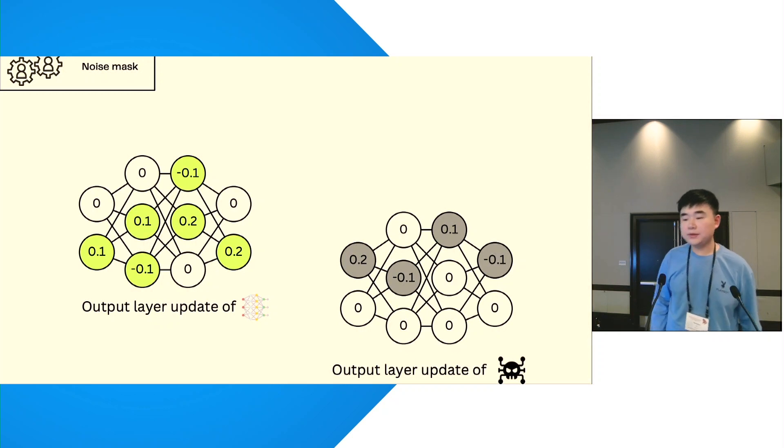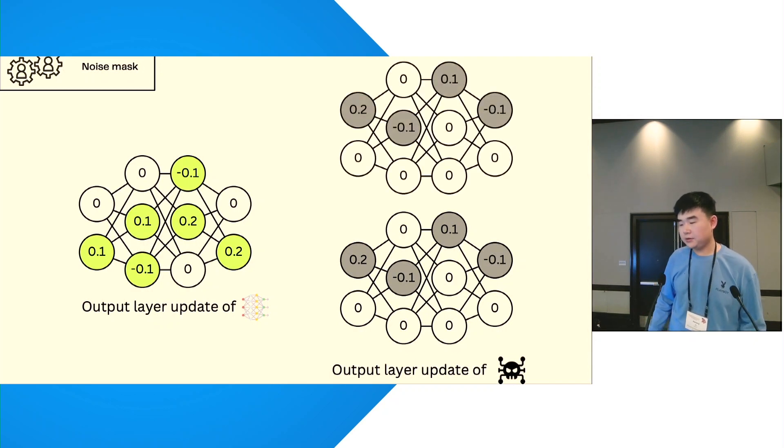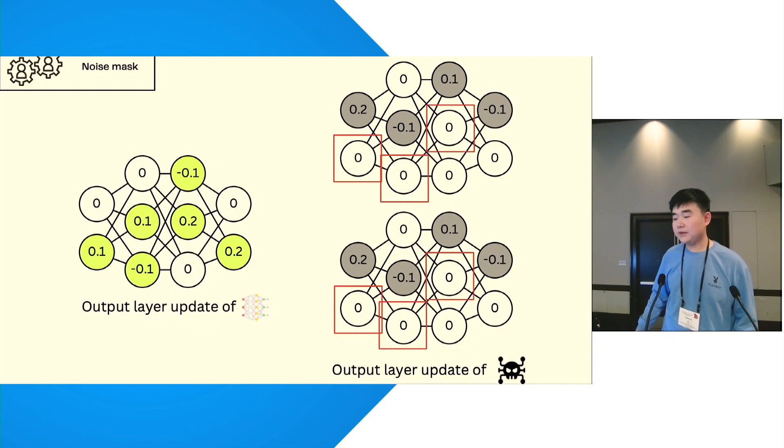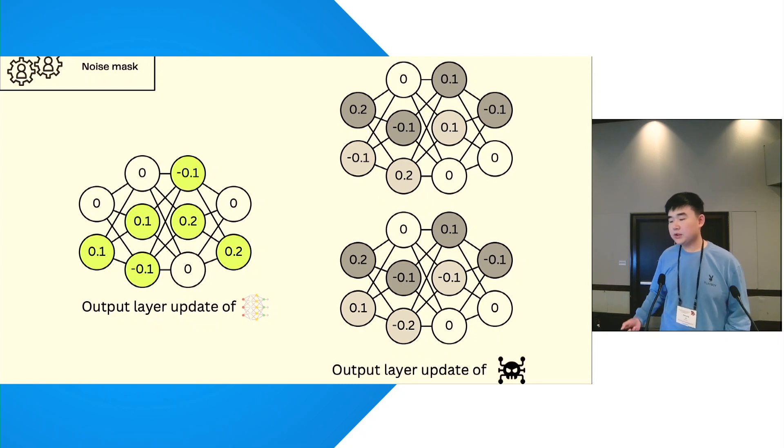one of our modules, Noise Mask, is handling this problem in a more effective fashion. Suppose the attacker has two devices, each of them holding a copy of the Backdoor Updates. The attacker will randomly select part of the low-updated neurons to perturb.